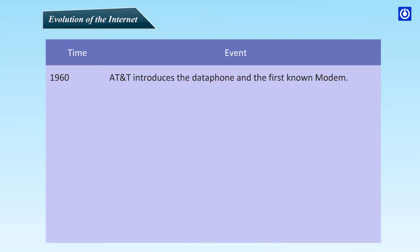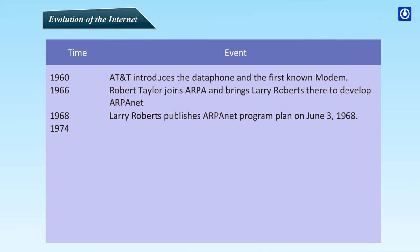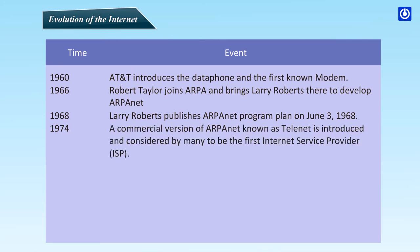1960: AT&T introduces the data phone and the first known modem. 1966: Robert Taylor joins ARPA and brings Larry Roberts there to develop ARPAnet. 1968: Larry Roberts publishes the ARPAnet program plan on June 3, 1968. 1974: A commercial version of ARPAnet known as Telenet is introduced and considered by many to be the first Internet Service Provider, ISP.